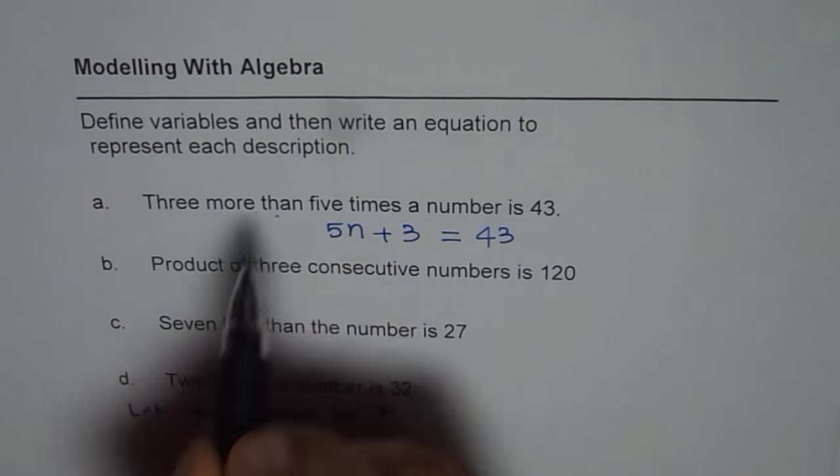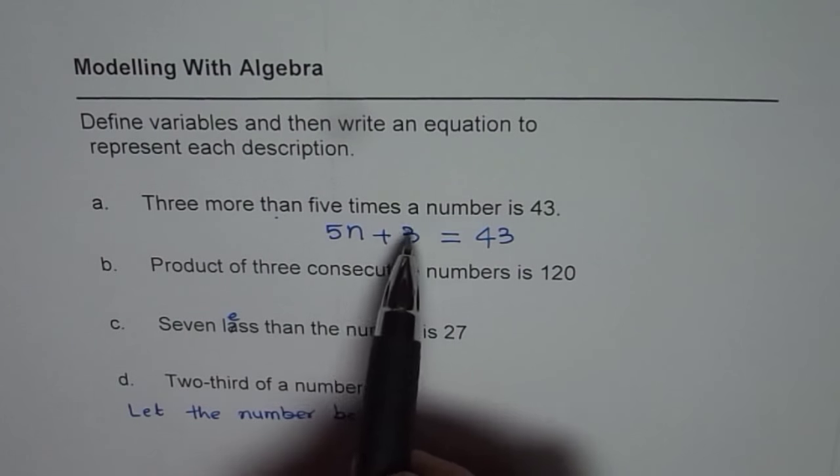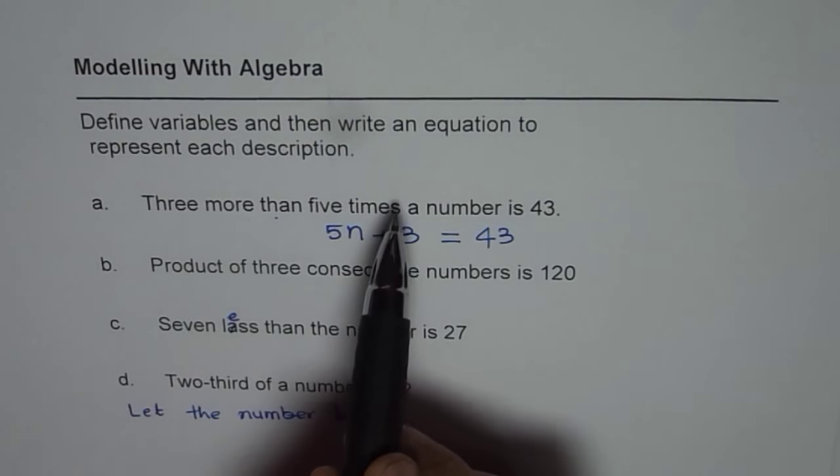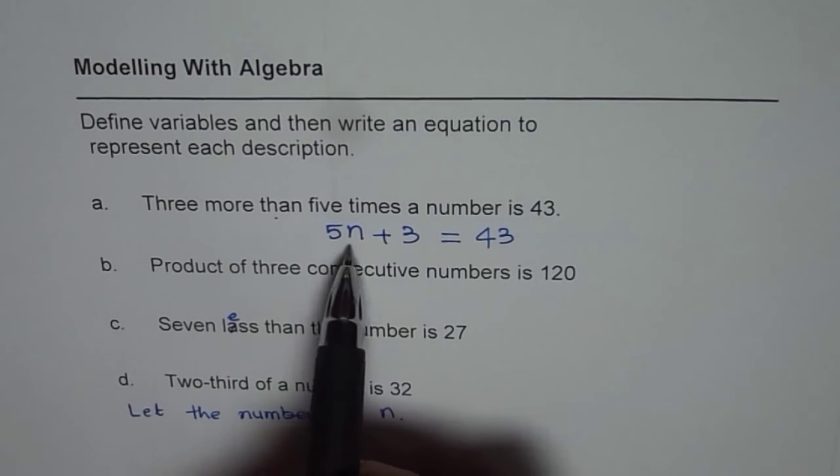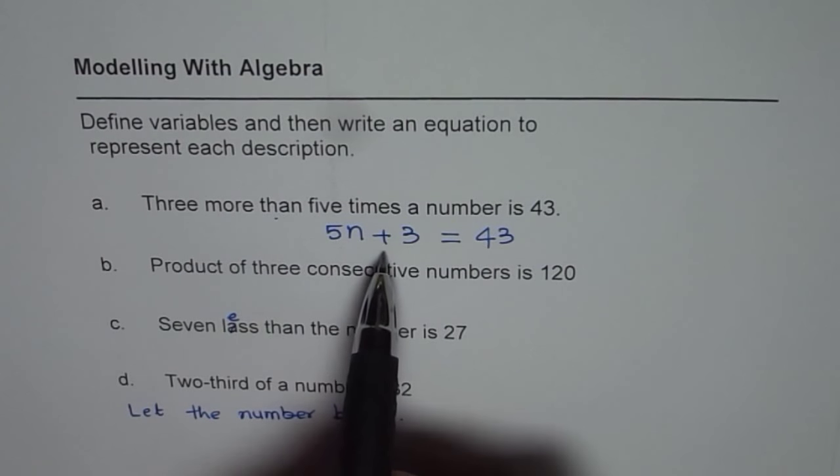Whenever you read 'than', then the number comes first. 3 more than 5 times, so 5 times n should come first. Take care since that can sometimes lead to error.